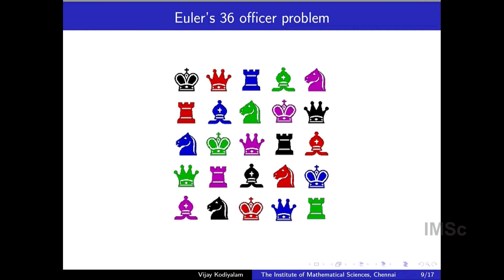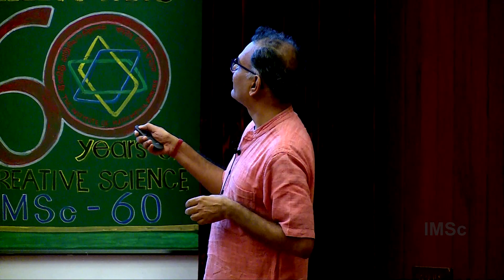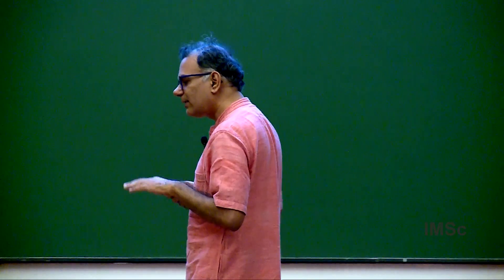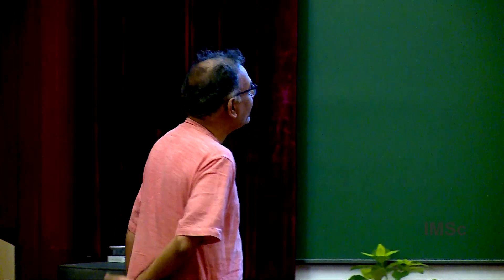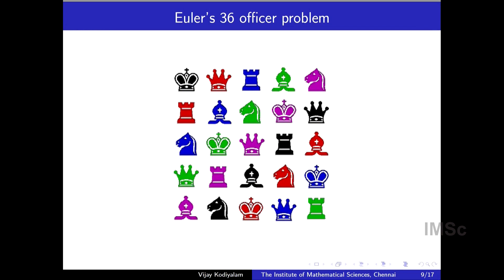Apparently, the Empress Catherine the Great of Russia asked Euler to solve this problem with officers and regiments. It's basically the same problem. But six, this is for five. This is five colors and five chess pieces. So can we do it for six? And Euler did not quite solve this, but he did say it is not possible. He said it's not possible without actually giving a proof. And much later, about 120 years later, it was proved that this is not possible. This is called Euler's 36 officers problem. So it's not possible to do the same thing for six. It is possible to do it for many other things. Six happens to be an exception.